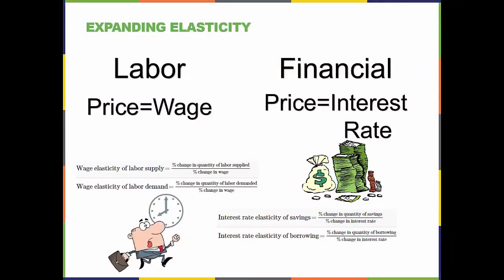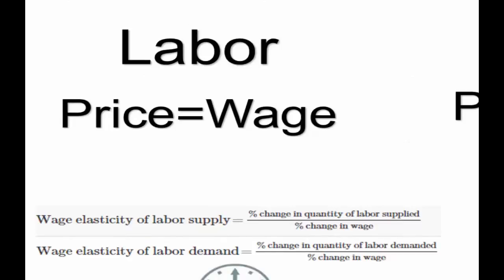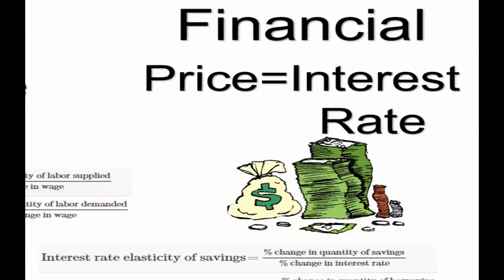We can connect the concept of elasticity with labor and financial markets. The price of labor is the wage and the quantity of labor is the amount of labor supplied by individuals. We can calculate the elasticity of labor supply using this knowledge and this equation; the coefficient is calculated and interpreted in the same manner as price elasticity of supply and demand. In the financial market, the price of money is the interest rate and the quantity is the amount of dollars transacted. Savings of households and individuals are the supply side of financial markets. We can calculate the elasticity of savings, and the coefficient gives insight into the supply of money based on changes in interest rates.